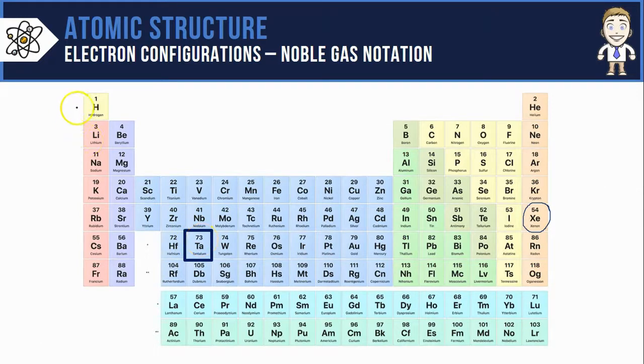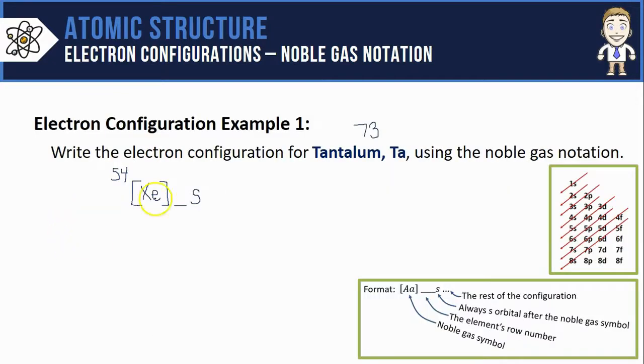Tantalum is in row 1, 2, 3, 4, 5, and 6, counting down from the top. After xenon's symbol will be 6s, which can hold two electrons. The hard part is now over.